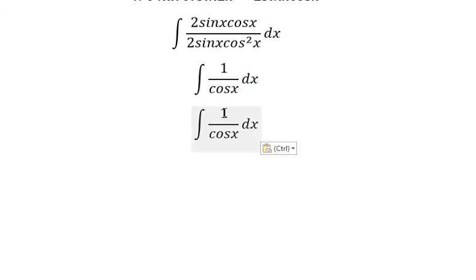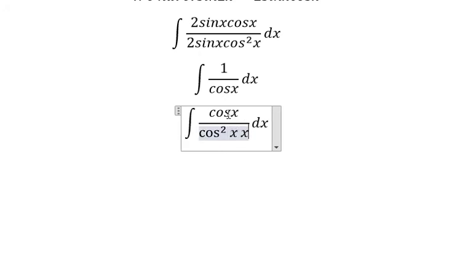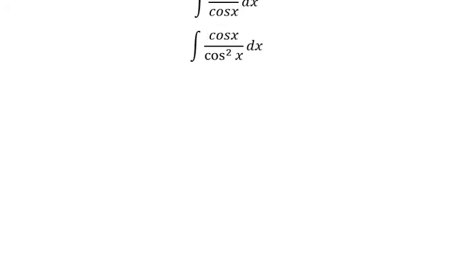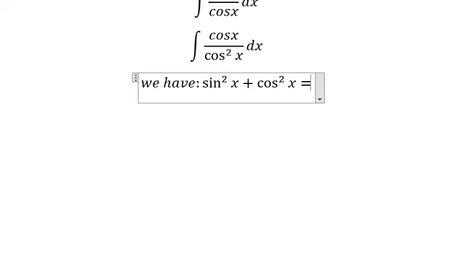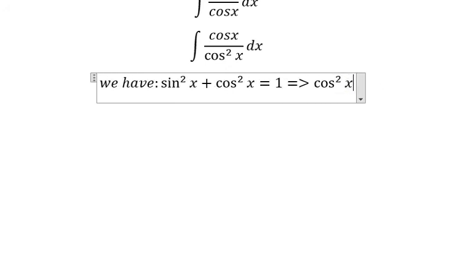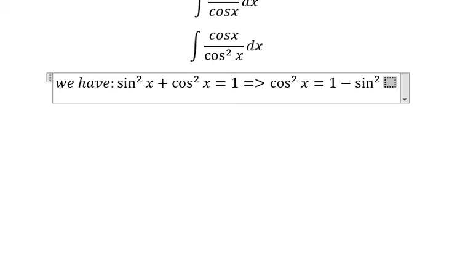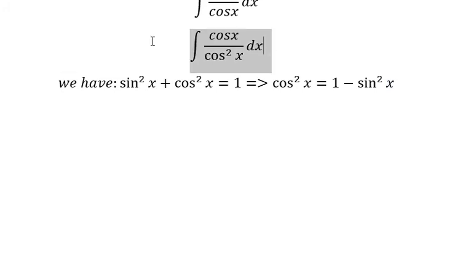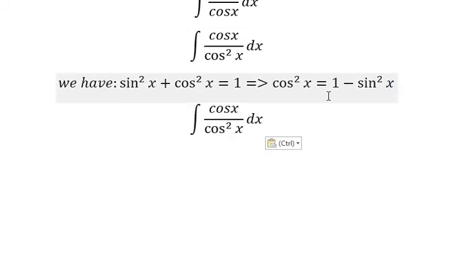We need to multiply with cosx on numerator and denominator. Next, we need to use this formula: sin²x plus cos²x equals 1. So we have cos²x equals 1 minus sin²x. So we change cos²x into 1 minus sin²x.